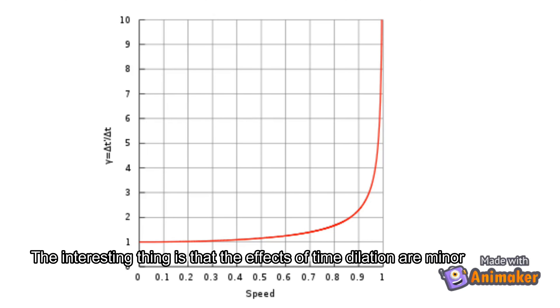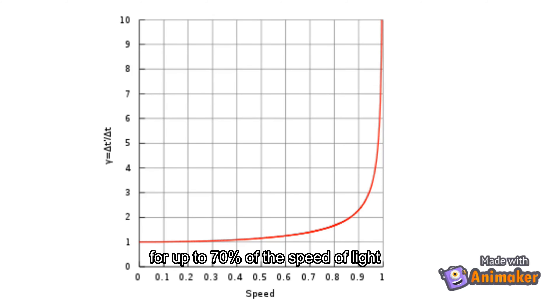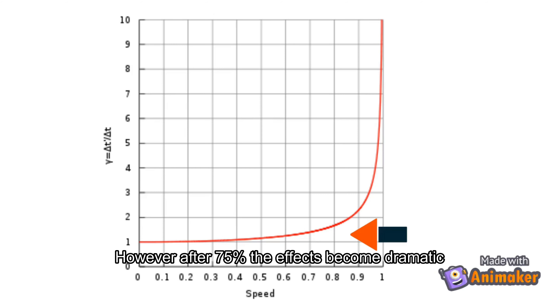The interesting thing is that the effects of time dilation are minor for up to 70% of the speed of light. However, after 75%, the effects become more dramatic.